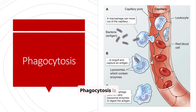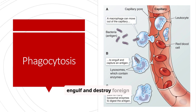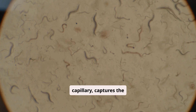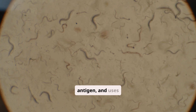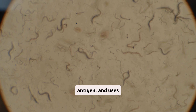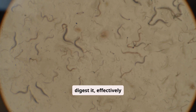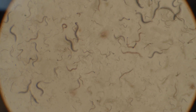Phagocytosis is a critical process where cells like macrophages engulf and destroy foreign particles, such as bacteria. The macrophage moves out of the capillary, captures the antigen, and uses lysosomal enzymes to digest it, effectively neutralizing the threat.